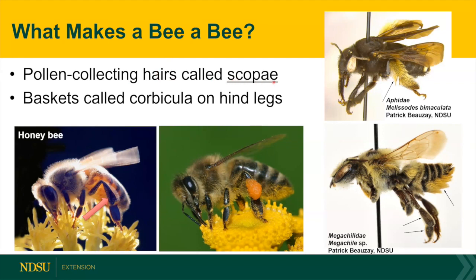Over here on the right, you can see hairs in the Melissodes that are attached to the hind leg. Under the Megachylidae, you can see the hairs are mainly on the underside of the abdomen. We also have pollen baskets — we call them corbiculae — located on the femur. They have a smooth area with hair on the sides that helps form the pollen basket. Usually the bees make a pollen ball, which is both nectar and pollen together, and they use that pollen ball to feed their young as they develop.